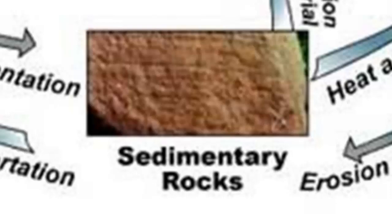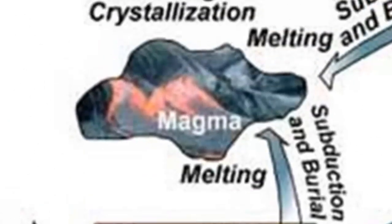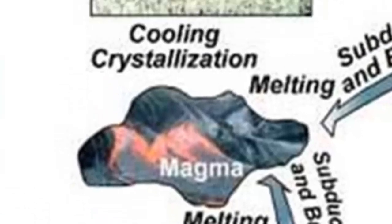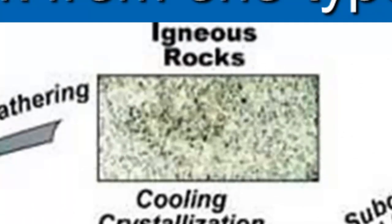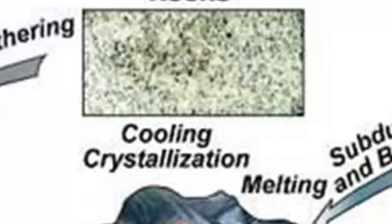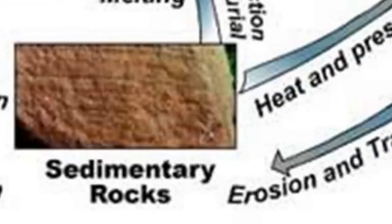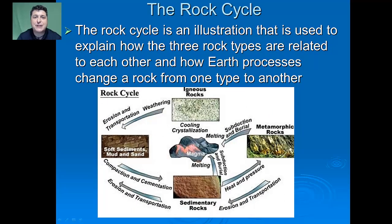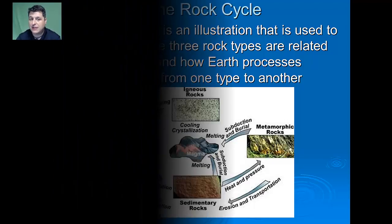If a sedimentary rock completely melts and forms magma, then cools either inside or outside the Earth, we get igneous rock. If instead the sedimentary rock is put under heat and pressure and only slightly melts and reforms, it will turn into metamorphic rock. Each rock type can change into another depending on the conditions and processes occurring within the Earth.